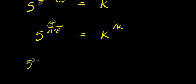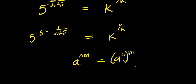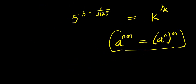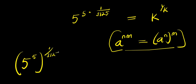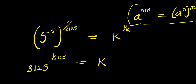From here, I have 5 to the power 5 times 1 over 31/5, equals k to the power 1 over k. So 5 to the power 5 times 1 over 31/5 equals k to the power 1 over k. And 5 to the power 5 — that is 5 times 5 times 5 times 5 times 5 — over 31/5, raised to the power 1 over 31/5, equals k to the power 1 over k.